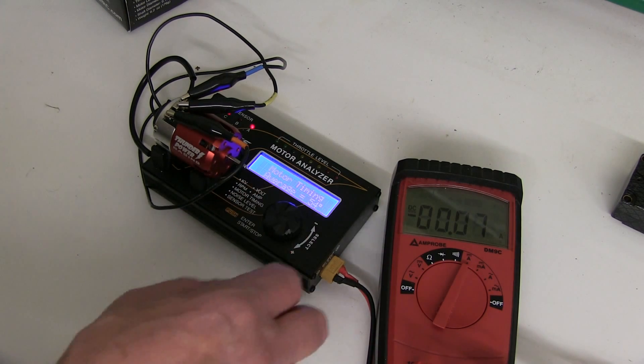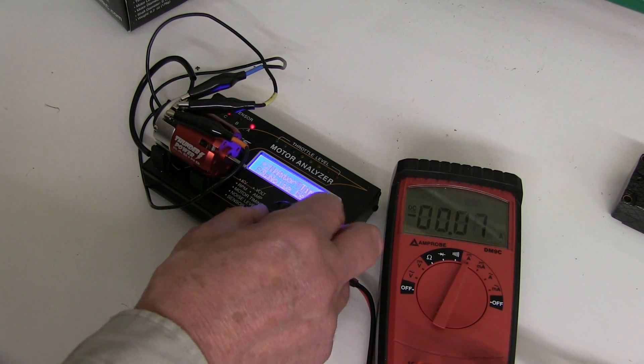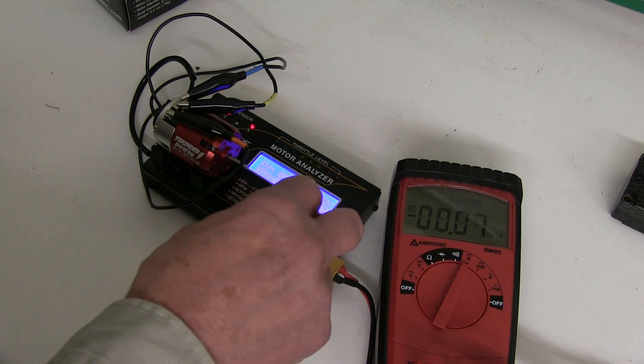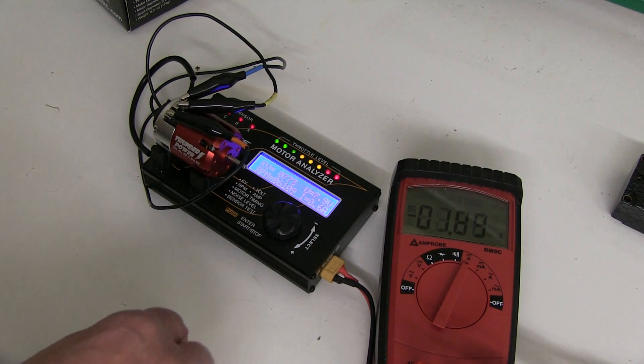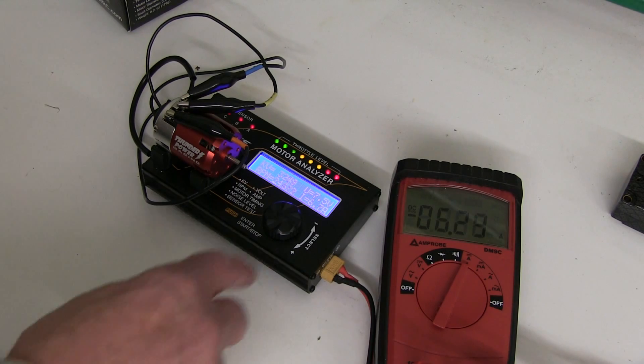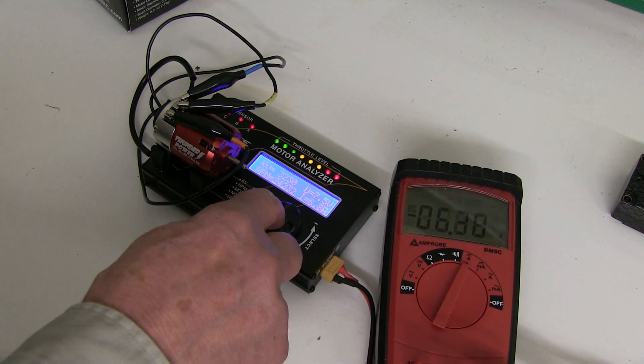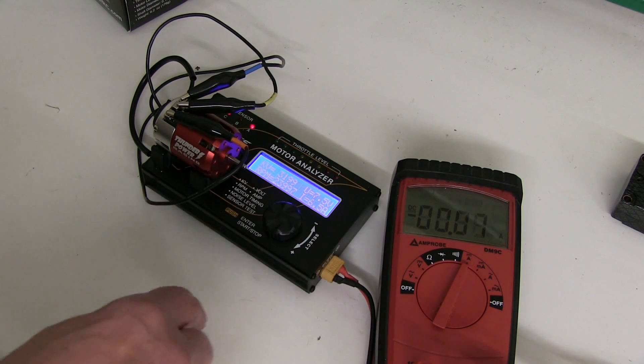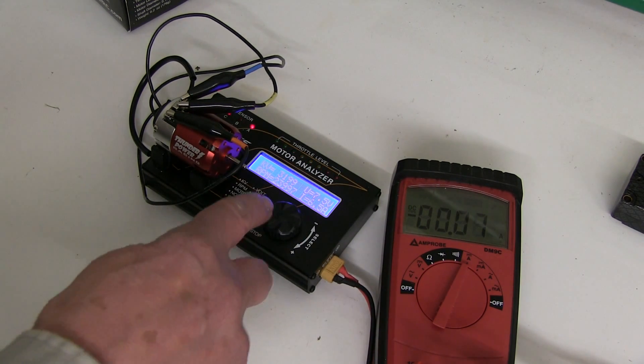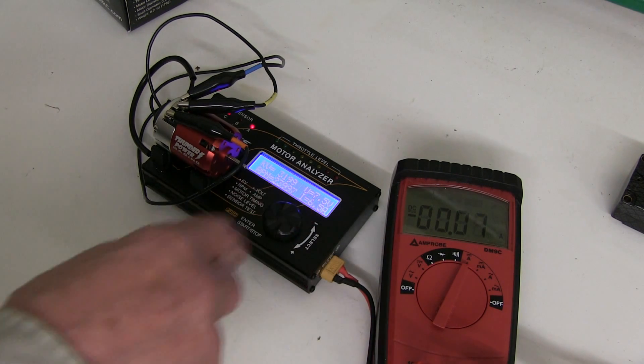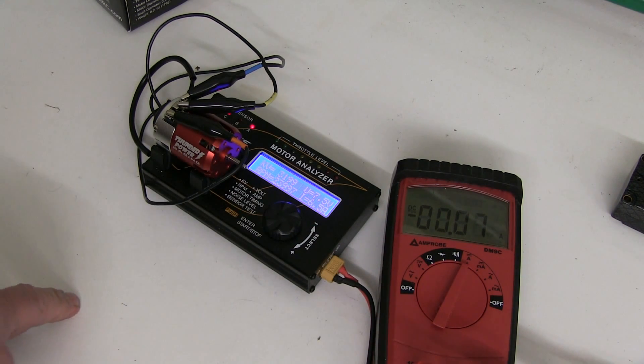54 degrees seems to be a bit of a magic number, but it says 45 on the endbell. Let's measure the KV. Sounds really good doesn't it? 6.5 amps, drawing 6.3 on there.